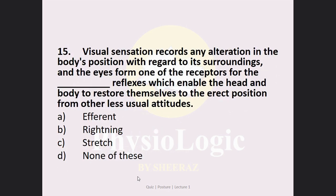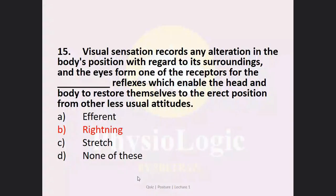Last MCQ: Visual sensation records any alteration in the body's position with regards to surroundings, and the eyes form one of the receptors for the blank reflexes which enable the head and body to restore themselves to the erect position from other less usual attitudes. Options: A: efferent, B: righting, C: stretch, D: none of these. The correct answer is Option B — righting reflex.